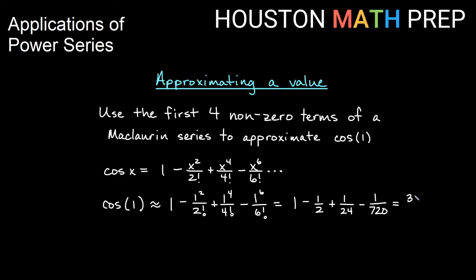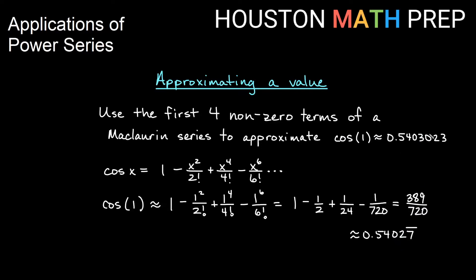The value we get is 389 over 720. Or if we want a decimal approximation, we get about 0.5402 repeating. If we plug cosine of one into a scientific calculator, it gives a decimal approximation of about 0.5403. So you can see we are pretty close — accurate to about the fourth decimal place. That's a good way to approximate cosine of one: just knowing the McLaurin series, we can plug in and approximate cosine of one.